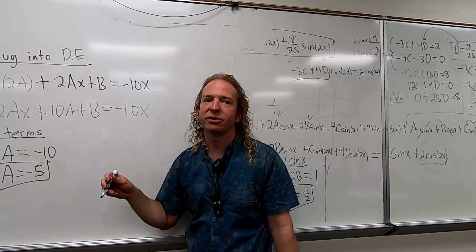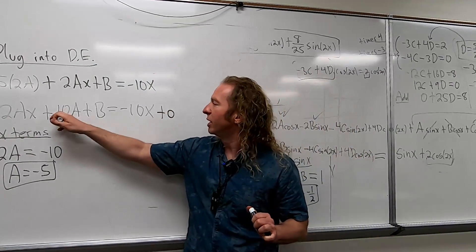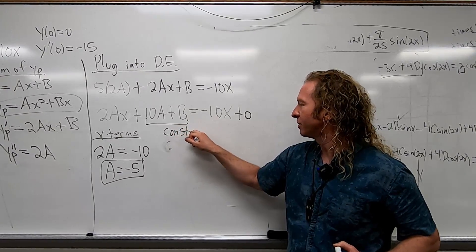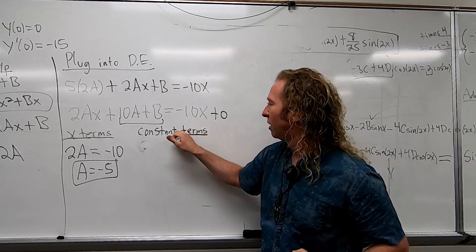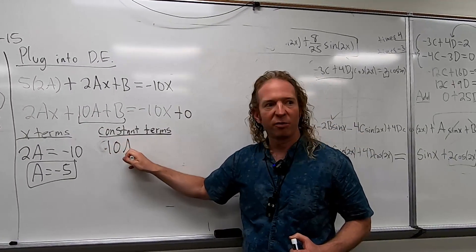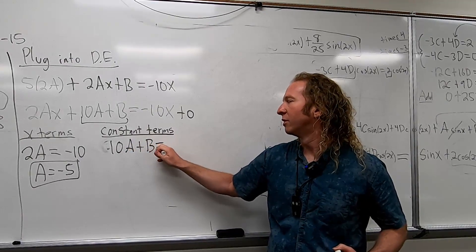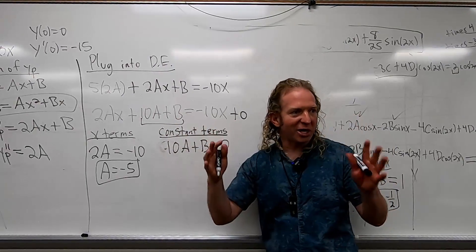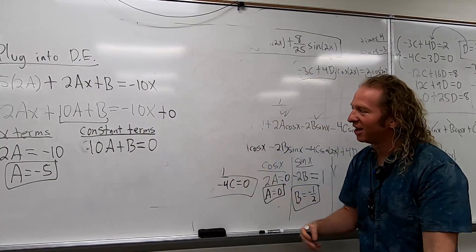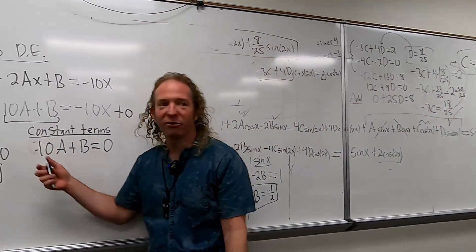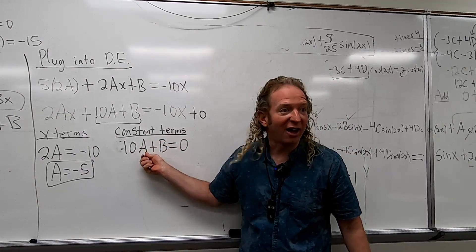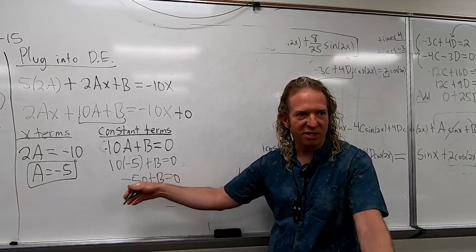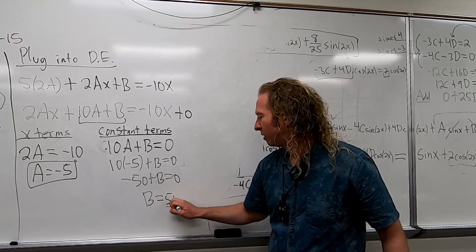And then now we have to equate the constant term. So this is a bit tricky as well. This is really plus 0. So you take 10A plus B and you set it equal to 0. So the whole thing is equal to 0. So I'll write constant terms. So 10A plus B equals 0. A is negative 5. So we get 10 times negative 5. It's a negative 50. So negative 50 plus B equals 0. So B is equal to 50. So B is... I'm just showing all the steps. B is equal to 50.